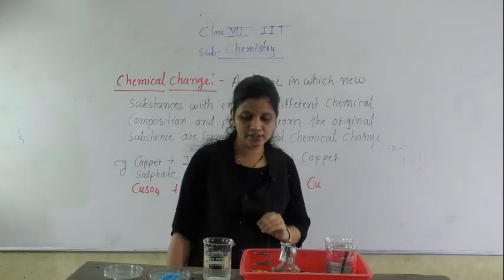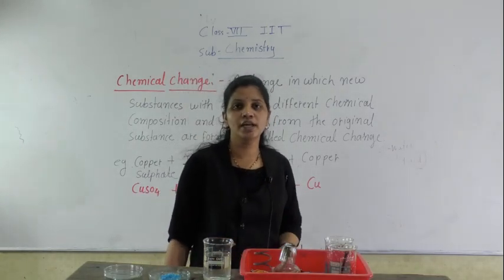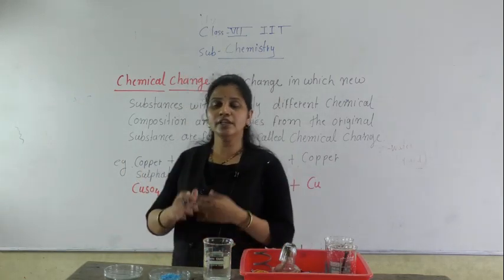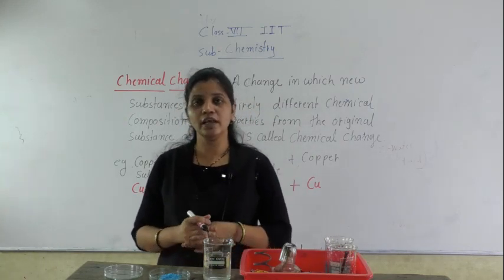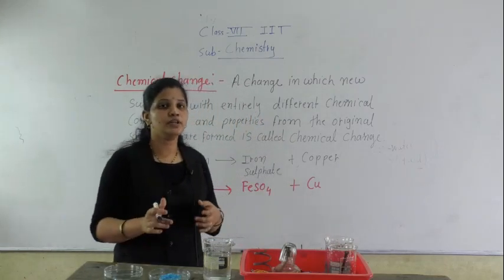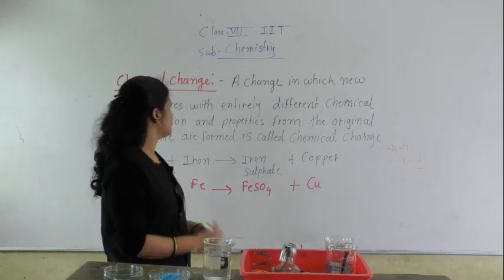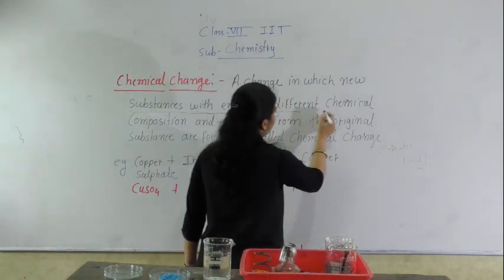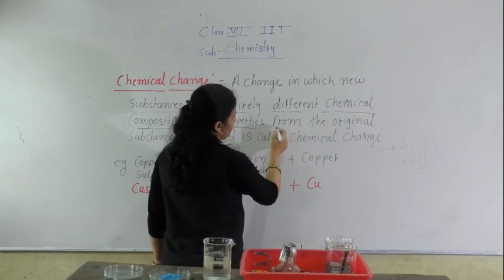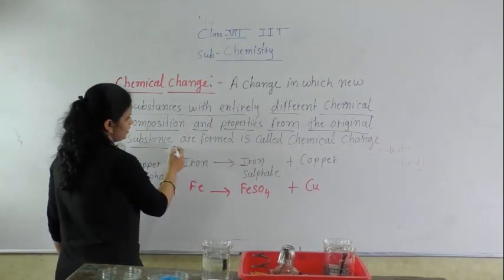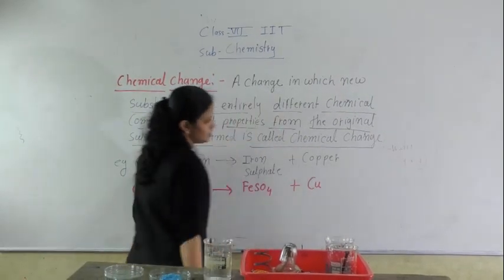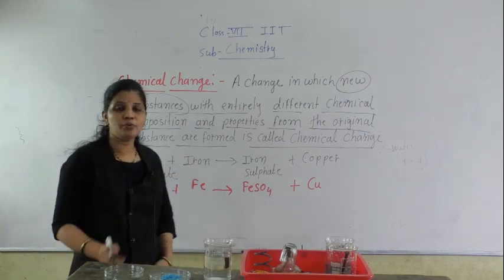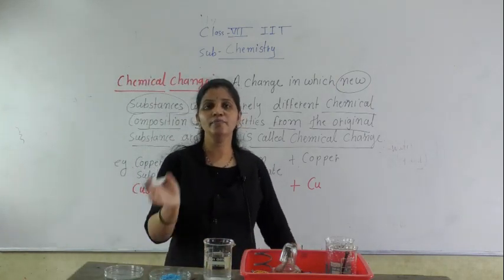Now, in chemical change — see, in the physical change, the change occurs in state, shape, and other physical properties — but in chemical change, a new substance is formed and a chemical reaction occurs. So what is exactly the definition of chemical change? A change in which a new substance with entirely different chemical composition and properties from the original substance is formed is called chemical change. Here, a new substance is formed and it is entirely different from the original substance.